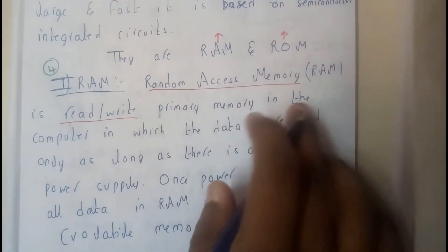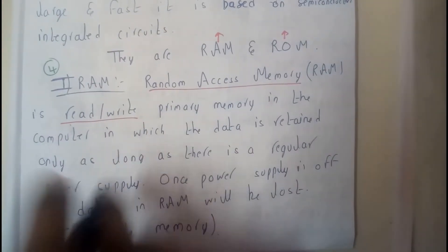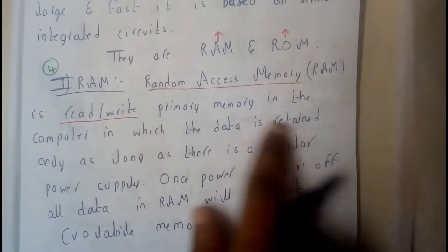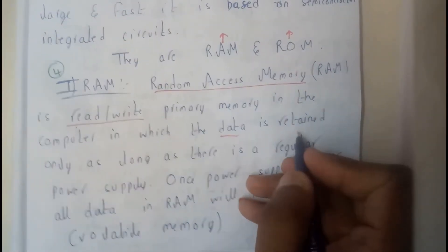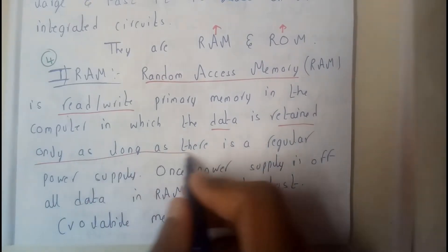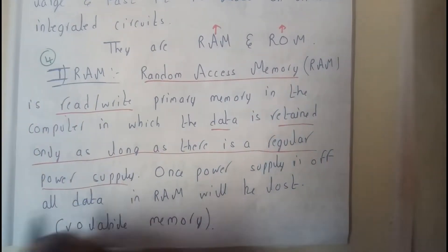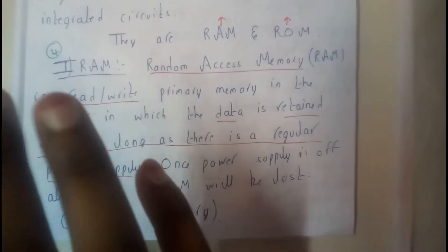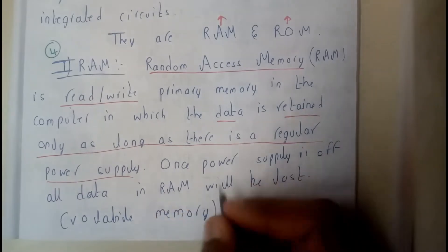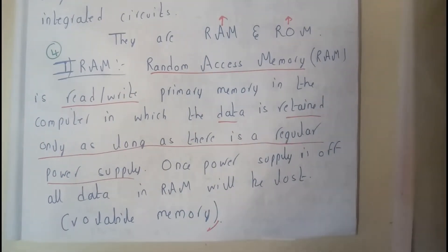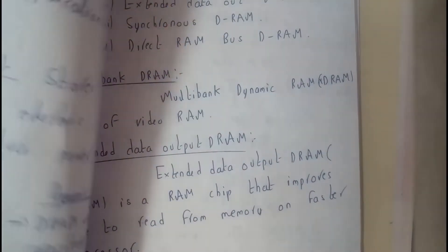RAM is a read-write primary memory in the computer. RAM and ROM both belong to primary memory. In the computer, data is retained only for as long as the power supply is on. Once the power supply is off, the data will be lost — that's the reason why we call RAM a volatile memory.